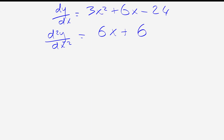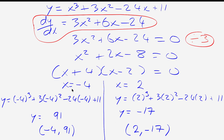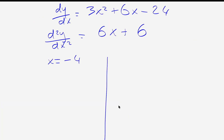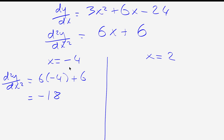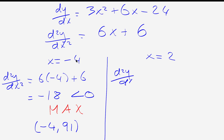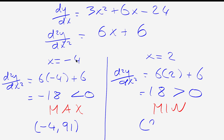Testing x = −4: d²y/dx² = 6(−4) + 6 = −18. Since −18 < 0, the point (−4, 91) is a local maximum. Testing x = 2: d²y/dx² = 6(2) + 6 = 18. Since 18 > 0, the point (2, −17) is a local minimum.